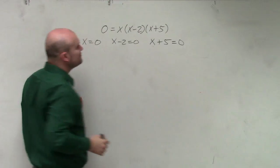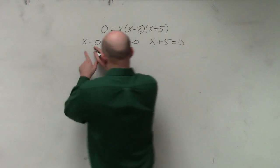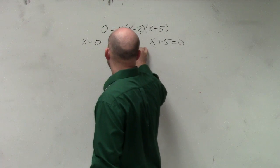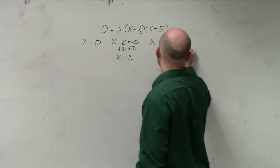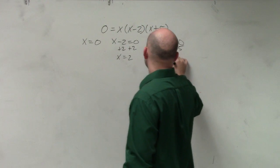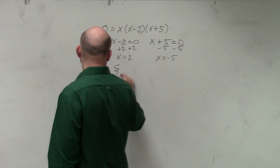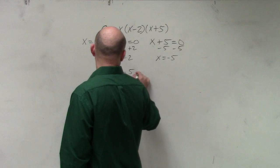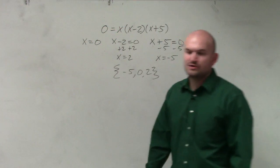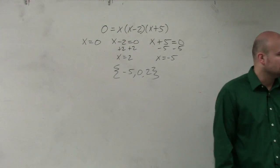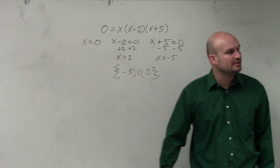So we set each factor equal to 0 and then we just go ahead and solve. Here we already have x equals 0. For the other factor I use my inverse property: x equals positive 2 — minus 5, minus 5 — x equals negative 5. So if I was going to find the zeros or the solutions, I could write this as a solution set, or you could just write them individually, whatever the case may be.